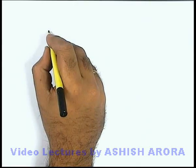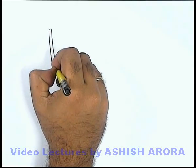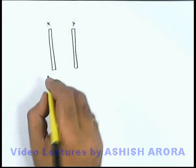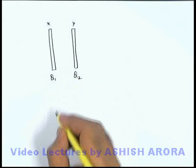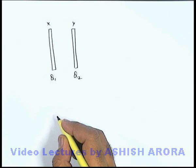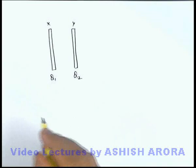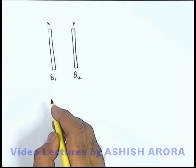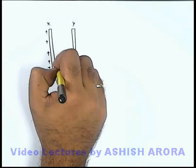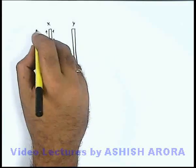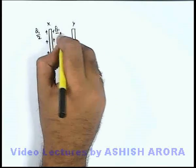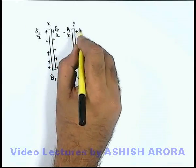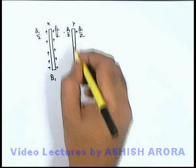Let us discuss a situation with two large parallel metal plates X and Y, where plate X carries charge Q1 and plate Y carries charge Q2. We need to find the distribution of charges on all four faces. Consider Q1 alone: it distributes as Q1/2 and Q1/2 on the two faces of plate X, and this induces minus Q1/2 and plus Q1/2 on plate Y.